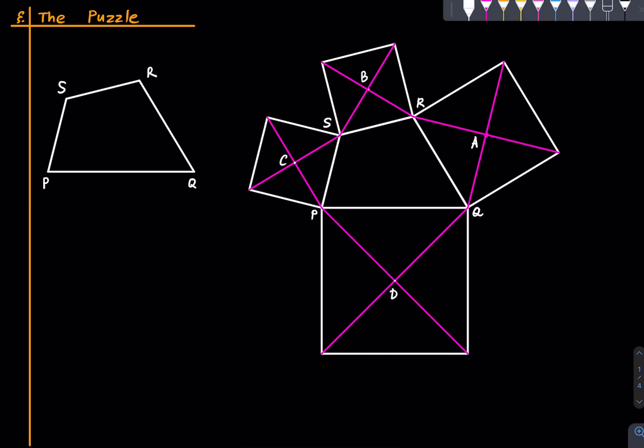And now what we do is we join the opposite centers. So we join A with C and we join B with D.